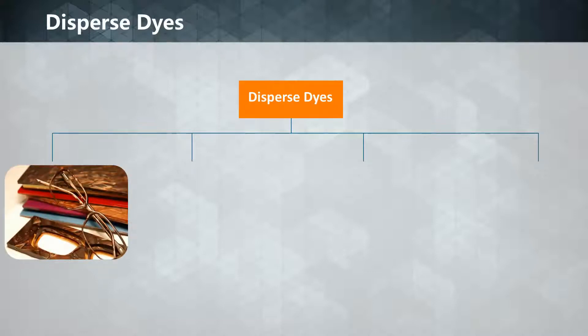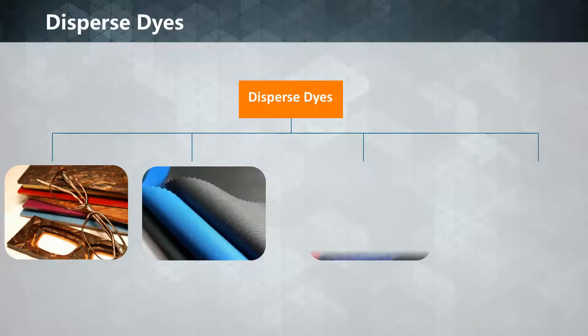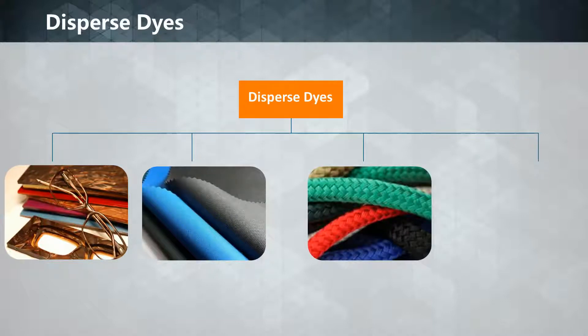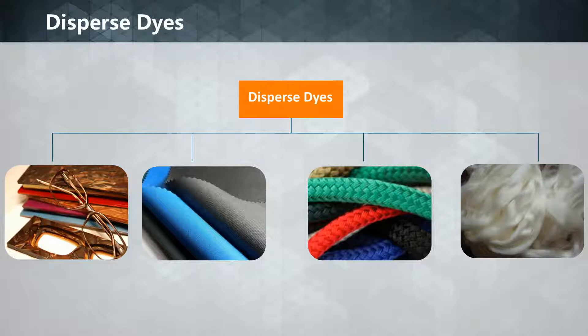Dispersed dyes are originally developed for the dyeing of cellulose acetate and are insoluble in water. They are commonly used to dye polyester, but they can also be used to dye nylon and acrylic fibers. The fine particle size of dispersed dyes provides a large surface area that helps dissolve to allow fiber absorption.